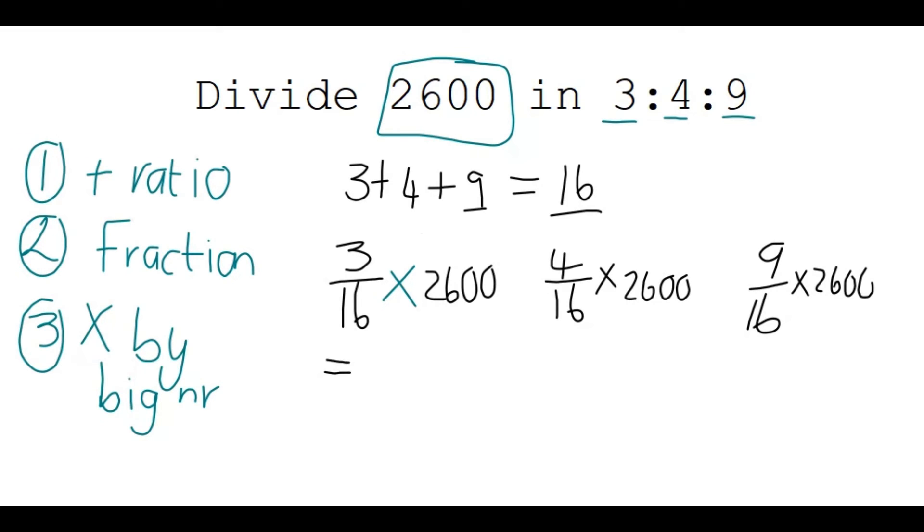And you'll see the answers are 487.5, 650, and 1462.5. And there we are. If you would now go and add all these numbers, you'll find that once again, they give you that big 2600.